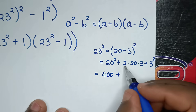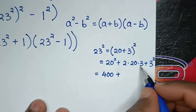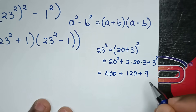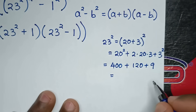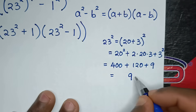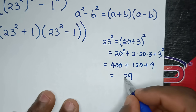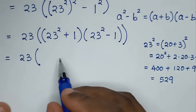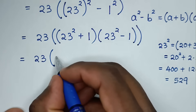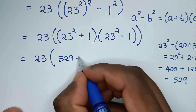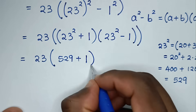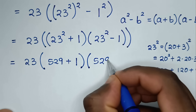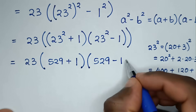Then plus 2 times 20 is 40, 40 times 3 is 120, plus 3 squared which is 9. So 400 plus 120 plus 9 equals 529. So 23 squared is 529. Then substituting: 23 squared plus 1 is 530, bracket, and 23 squared minus 1 is 528, bracket.